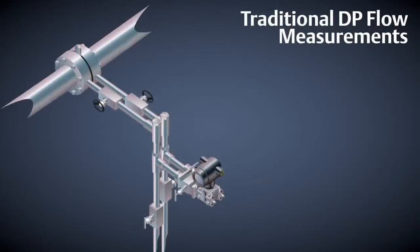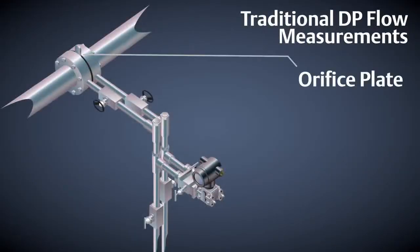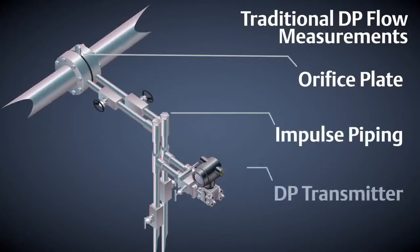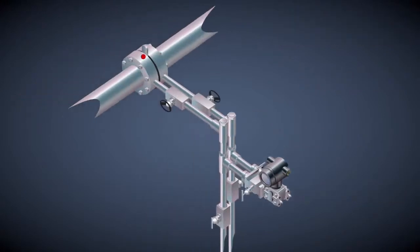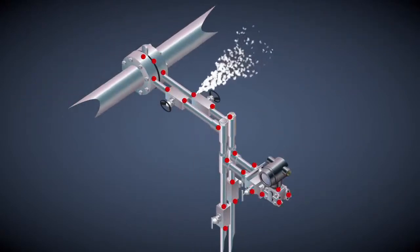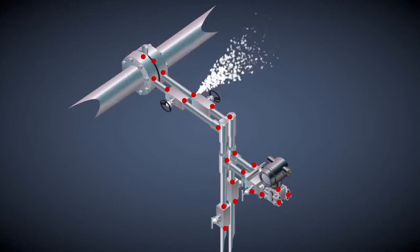Traditionally, transmitters were connected to the process with external impulse piping. Impulse piping is a major expense and gives opportunities for multiple leaks and creates unnecessary safety hazards by adding extra valves and manifolds to the process connection.